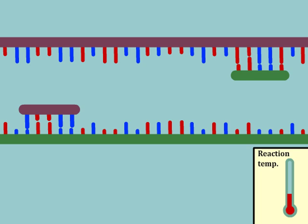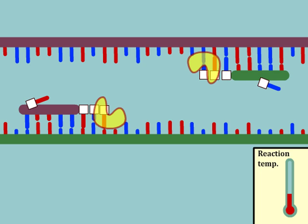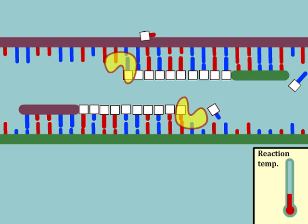As the temperature is lowered further, the polymerase finds the three prime ends of the primers and the enzyme begins to add nucleotides to the end of the primer using the complementary strand as a template.